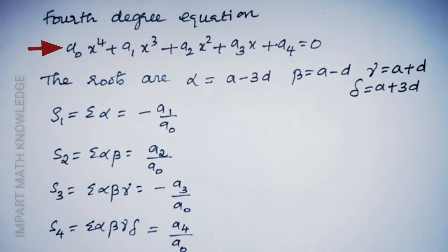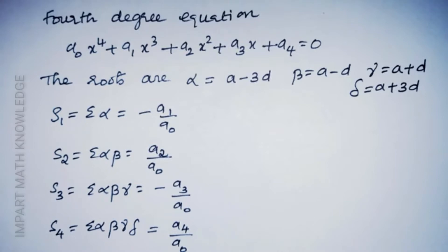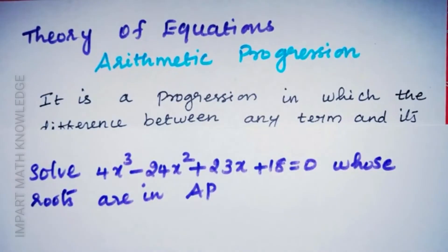For a fourth-degree equation, the roots are assumed as a-3d, a-d, a+d, and a+3d. Here s1 is the sum of roots taken one at a time, s2 the sum taken two at a time, s3 the sum taken three at a time, and s4 the product of the roots.